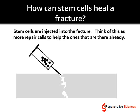How can stem cells heal a fracture? Stem cells are injected into the fracture — think of this as more repair cells to help the ones that are already there. This is nothing more than putting more soldiers on the ground, or more repairmen in the field, to try to get the job done. These cells are injected into the site, they turn into bone-producing cells, and then enough bone is produced to get the site to heal.